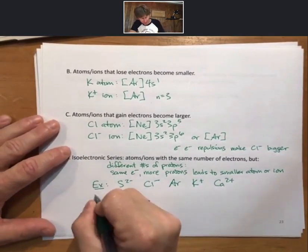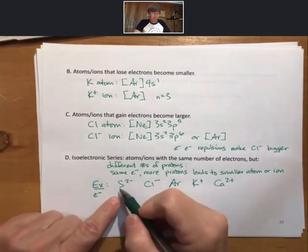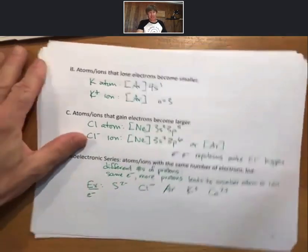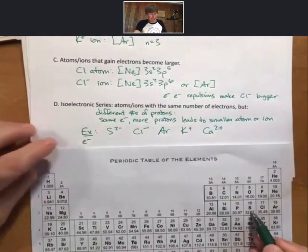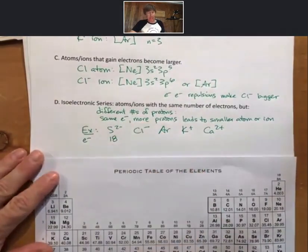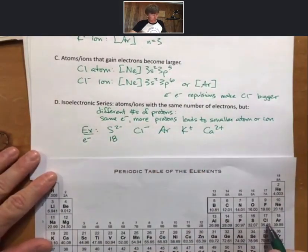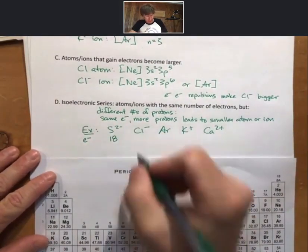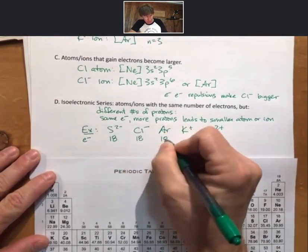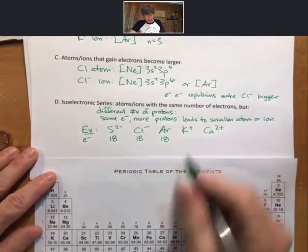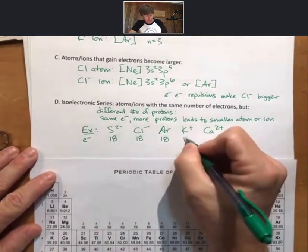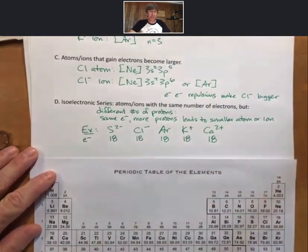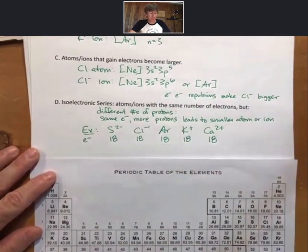Meaning that if we look at the number of electrons, sulfur has 16 electrons for the atom. Add two more for the charge, 18 electrons. Chlorine, argon, both as well. Potassium ion. Potassium atom has 19, lose one. Potassium atom, calcium atom, lose two. So same number of electrons, isoelectronic series.